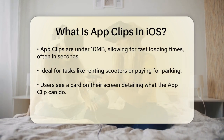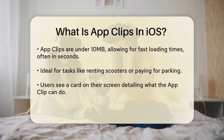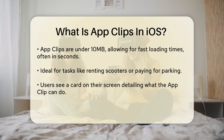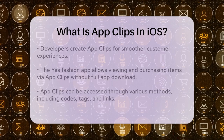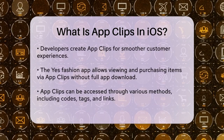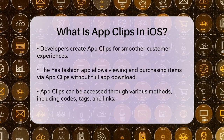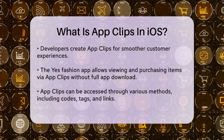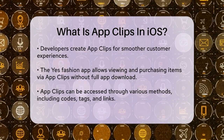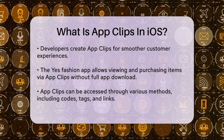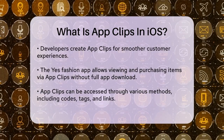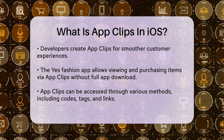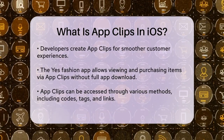This makes them perfect for tasks like renting a scooter or paying for parking, where you don't need the full app to get the job done. If you have an App Clip, you might see a card at the bottom of your iPhone screen. This card will tell you what the App Clip can do, like 'tap open to unlock this scooter and ride.' Once you tap open, you can complete the task, and when you're done, the App Clip will disappear.